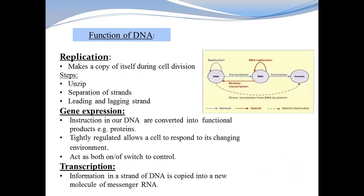The first function of DNA is replication. Replication happens during cell division, when DNA makes multiple copies of itself. The first step is to unzip the DNA — the double-stranded structure is unzipped and the two strands separate. This separation point is called the replication fork, which is used as a template for making new strands of DNA.